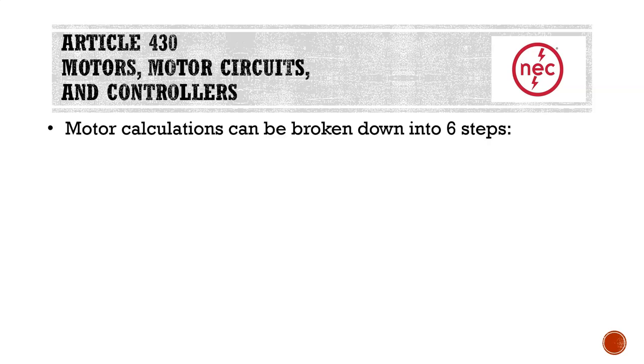Article 430 covers motors, motor circuits, and controllers. Motor calculations can be broken down into six steps. Rather than just going through Article 430 talking about different things, in this lesson we're going to be jumping around in Article 430 in order to, in a logical series of steps, figure out different types of calculations that we need to do involving motors.